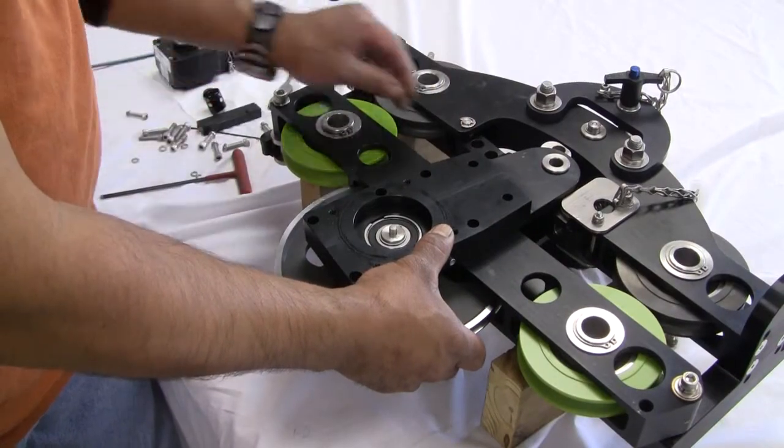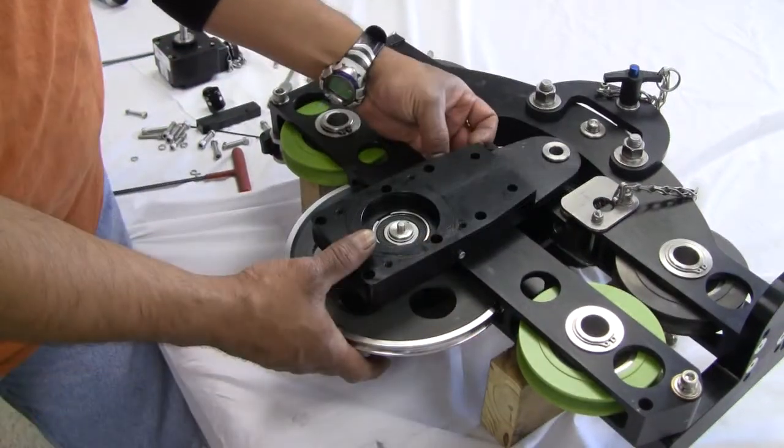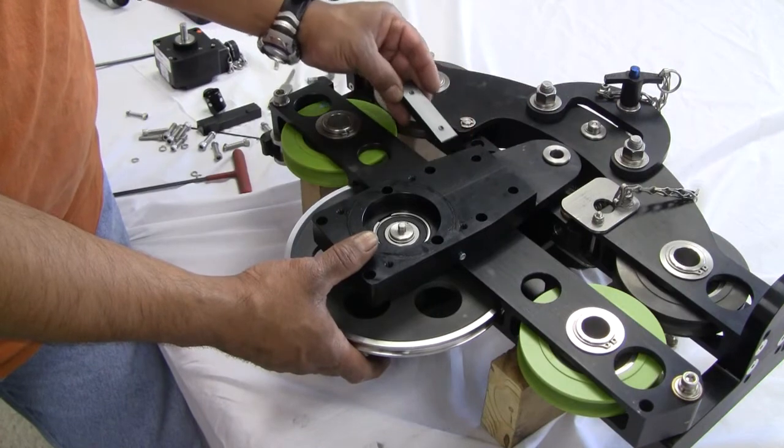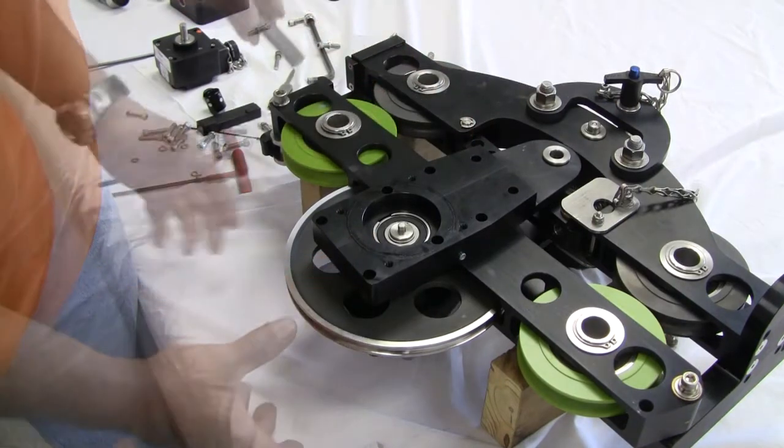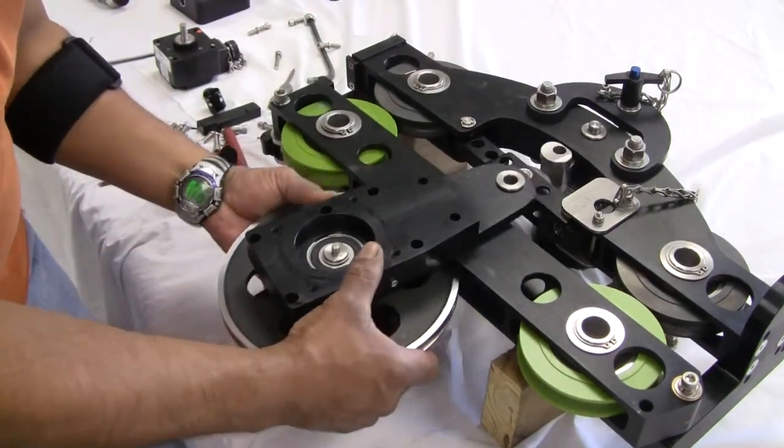The two wear bars are now free and need to be removed. The measuring wheel assembly can now be removed.